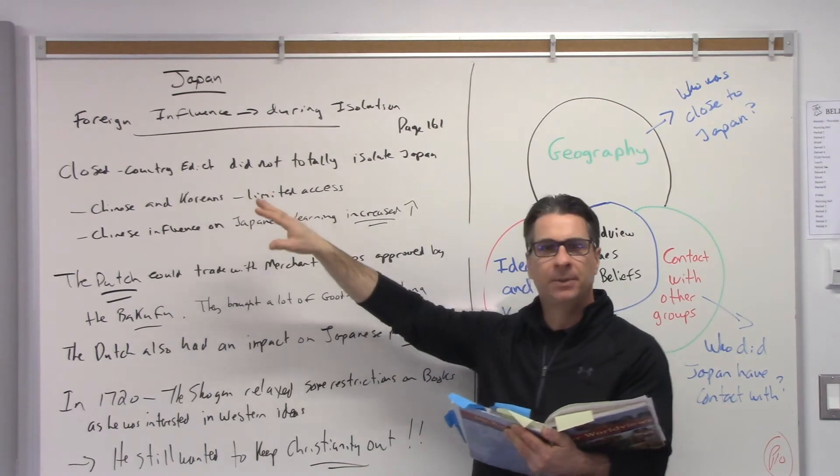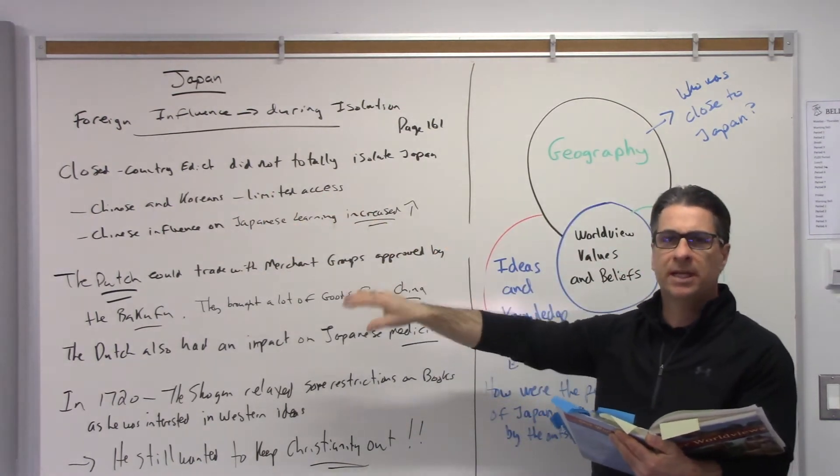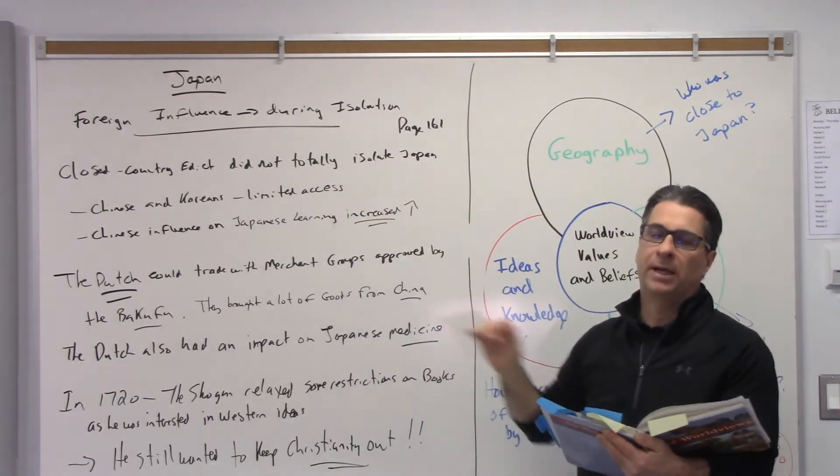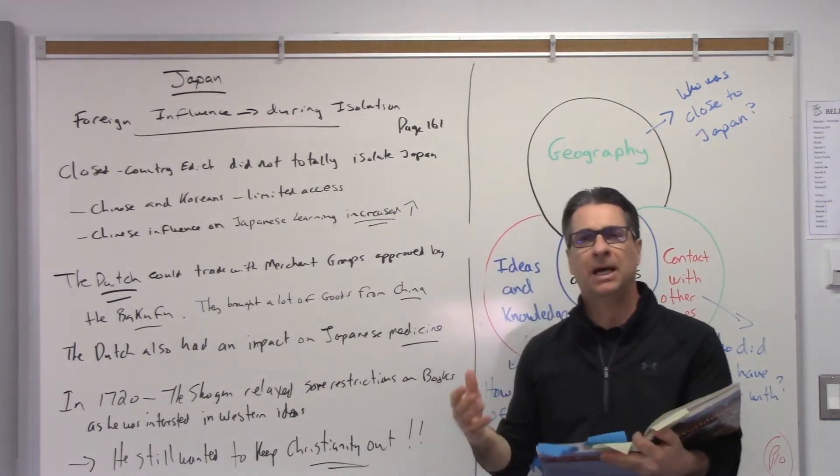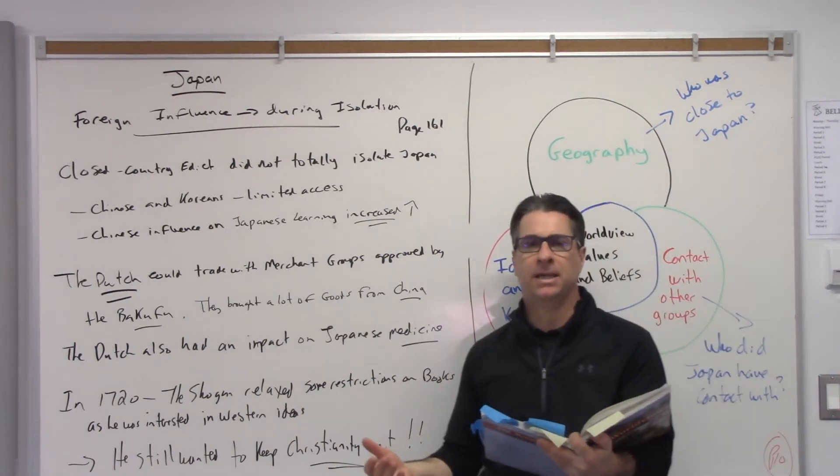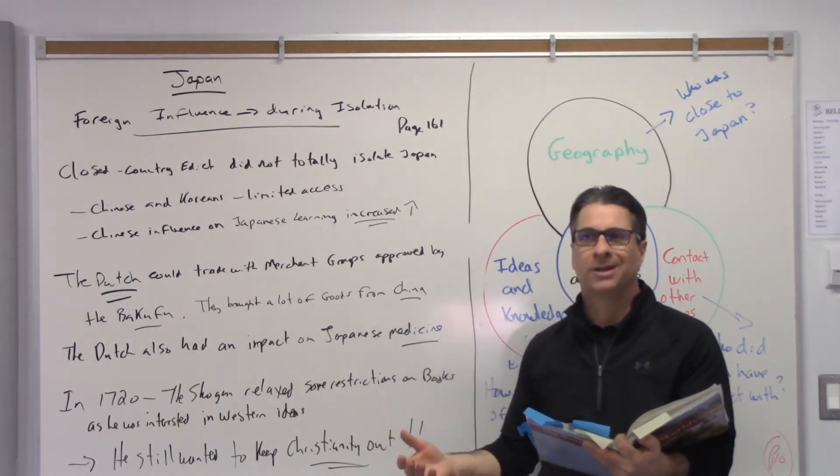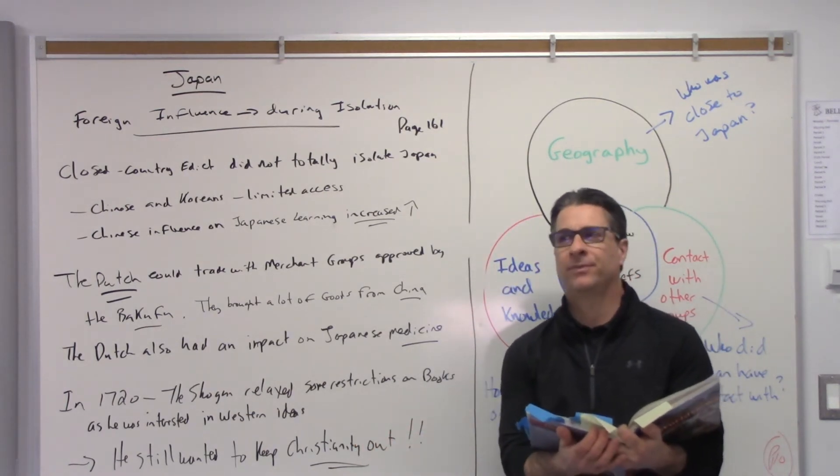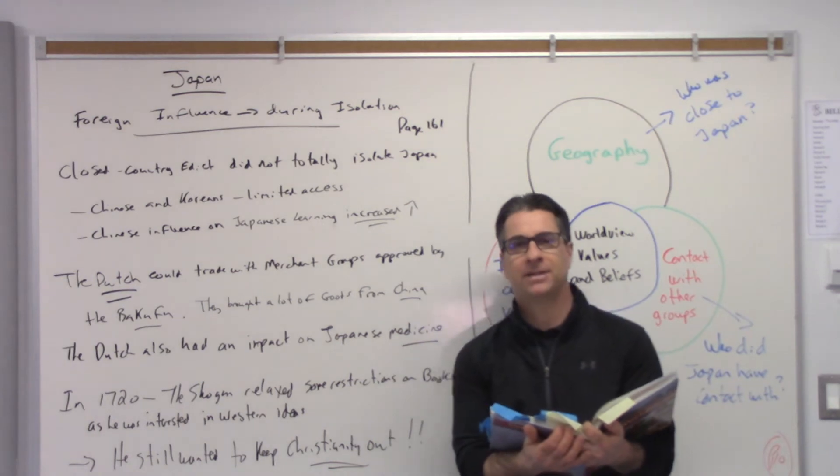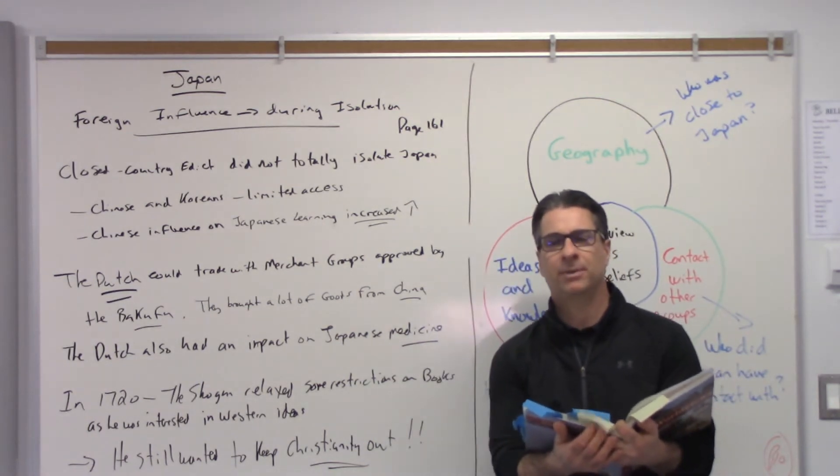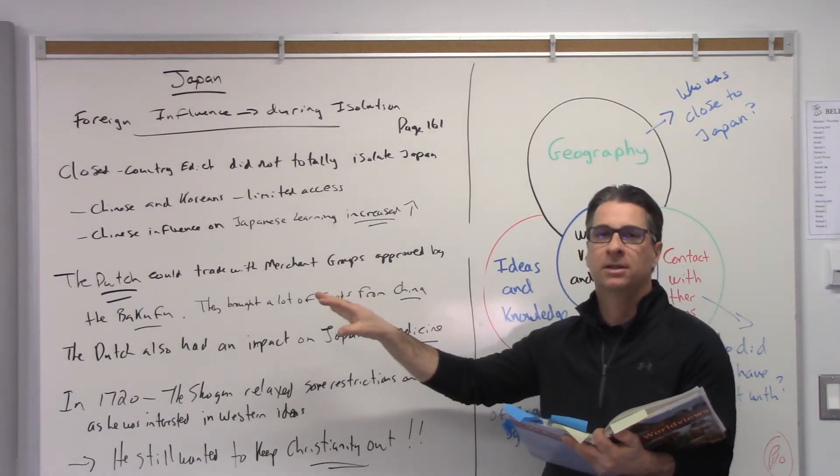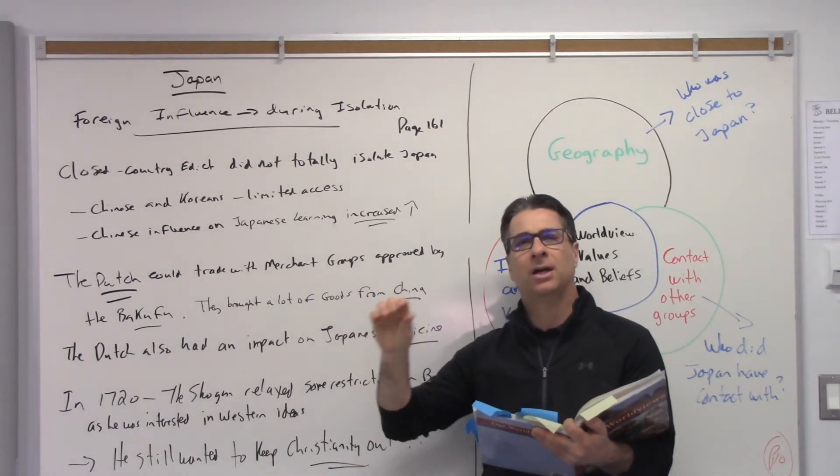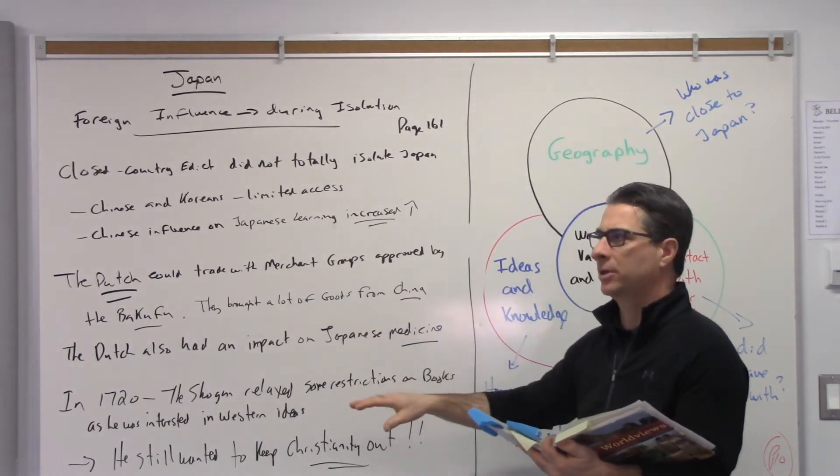Korea and China still had limited access and trade. The Dutch were getting a lot of goods from China and bringing them into Japan. They were the one main country that was still allowed to have the most access. Some ships actually tried to fly a Dutch flag to get into Japan and trade but were caught and dealt with for that. So foreign influence was a little bit there, not a lot, but the main thing is they wanted to stop Christianity.